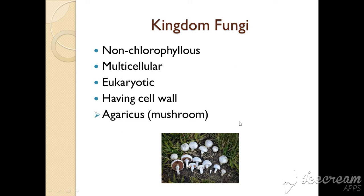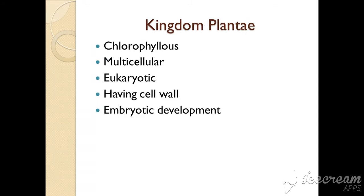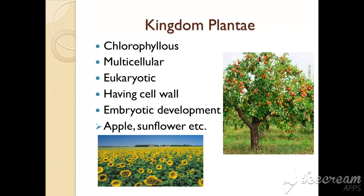These are called mushrooms; the scientific name is Agaricus — an example of kingdom Fungi. Next, kingdom Plantae: characteristics are multicellular, eukaryotic, having a cell wall, and having embryonic development. They have chlorophyll, so examples include apple, sunflower, etc.